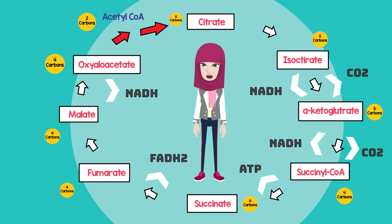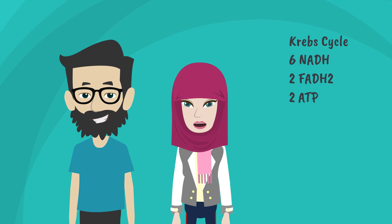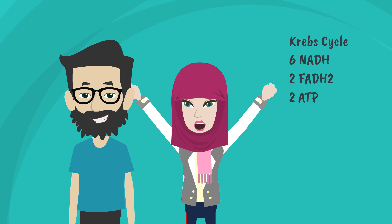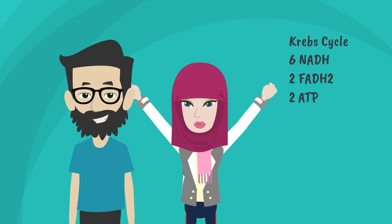And the cycle keeps on turning. It turns twice for every glucose molecule we get from our food. So there you have it — the Krebs cycle in a nutshell — where we are left with 6 NADH, 2 FADH2, and 2 ATPs, ready to be used for the next process in cellular respiration.